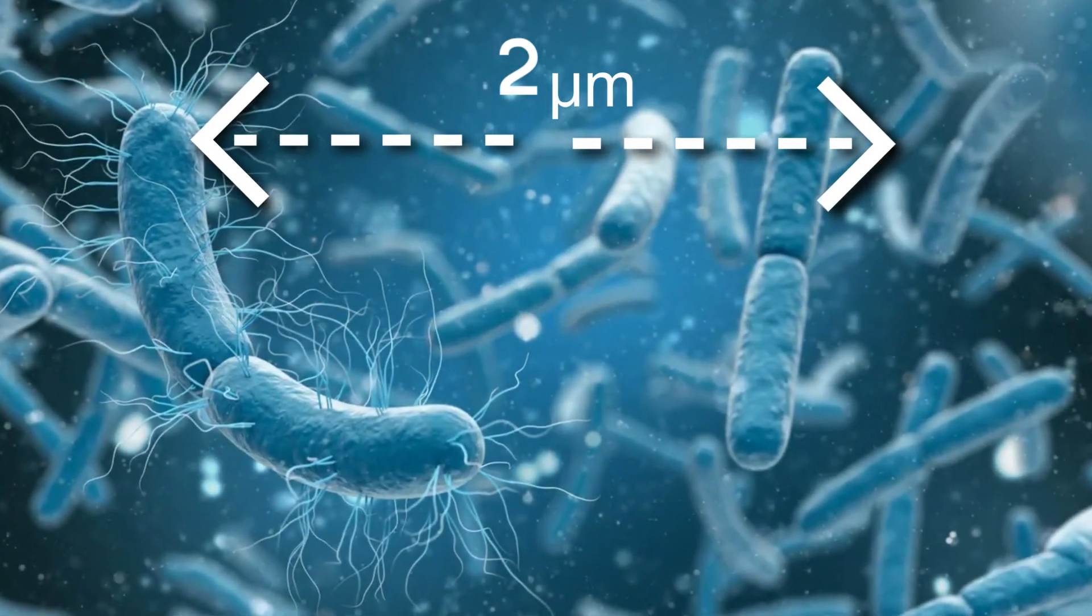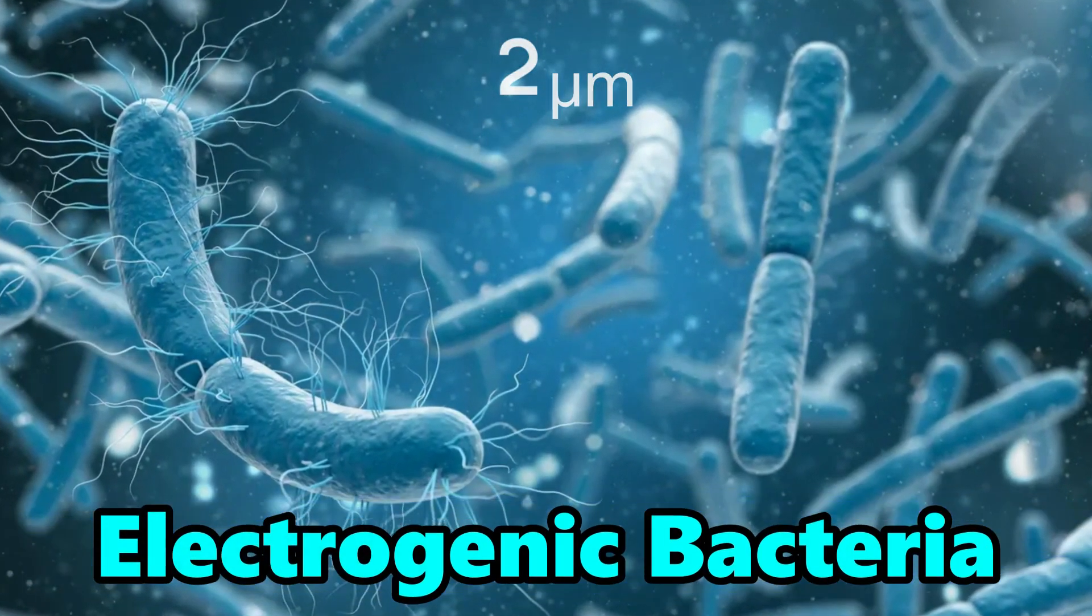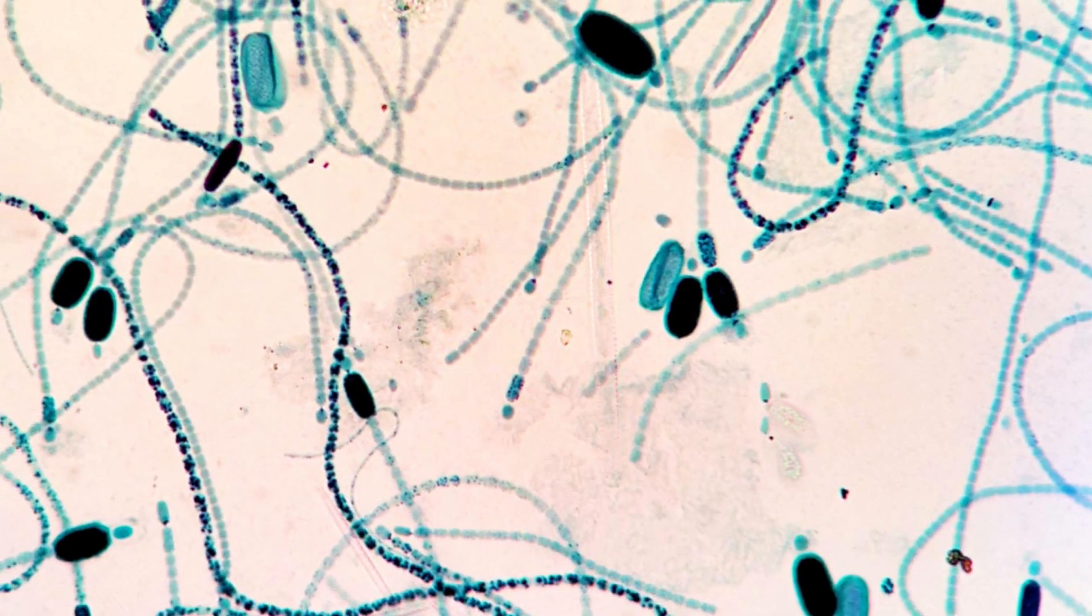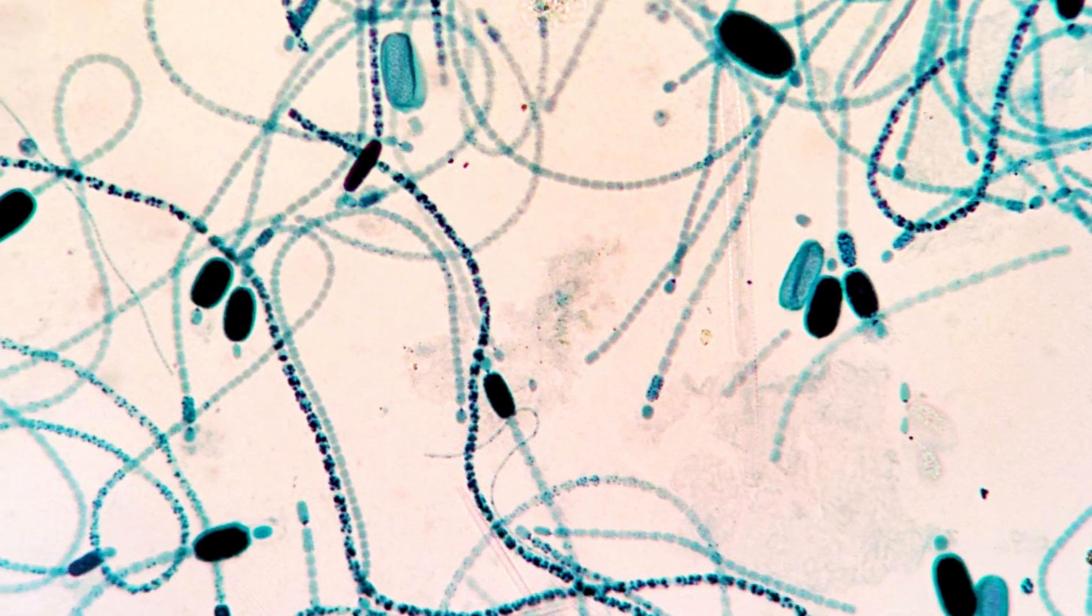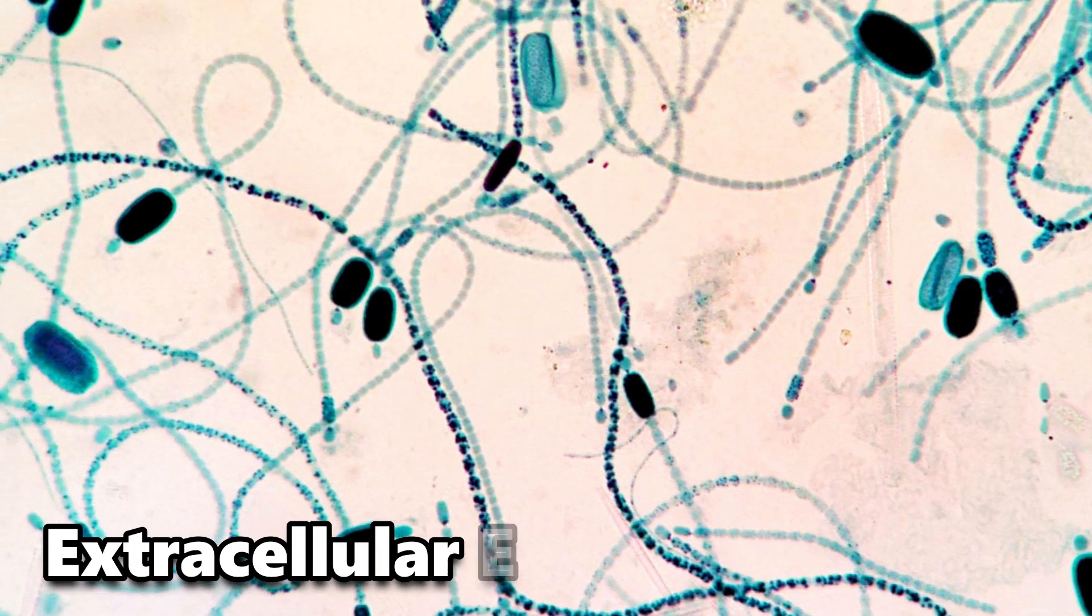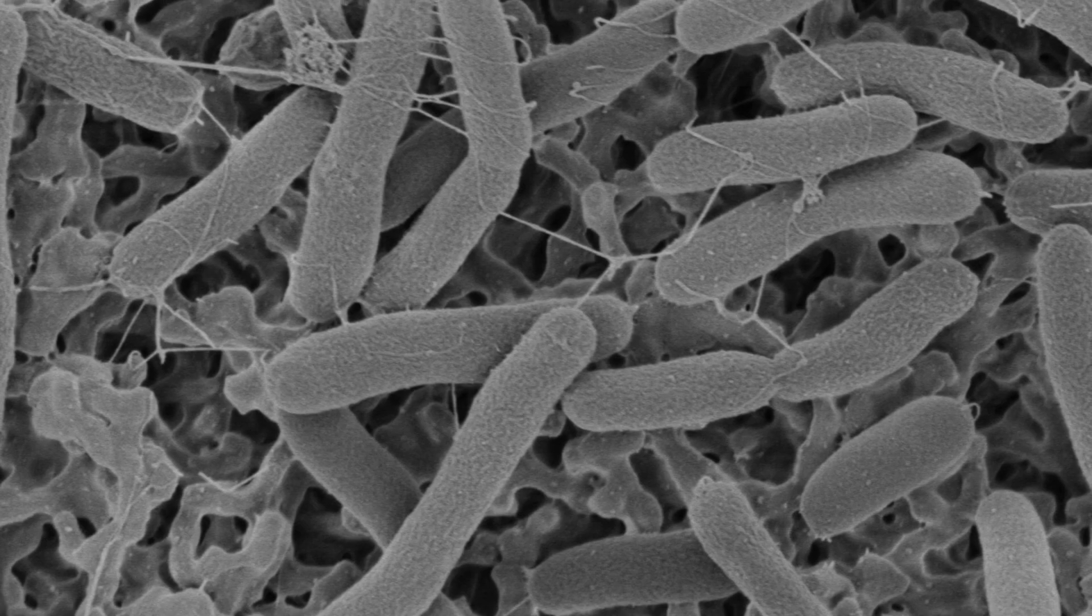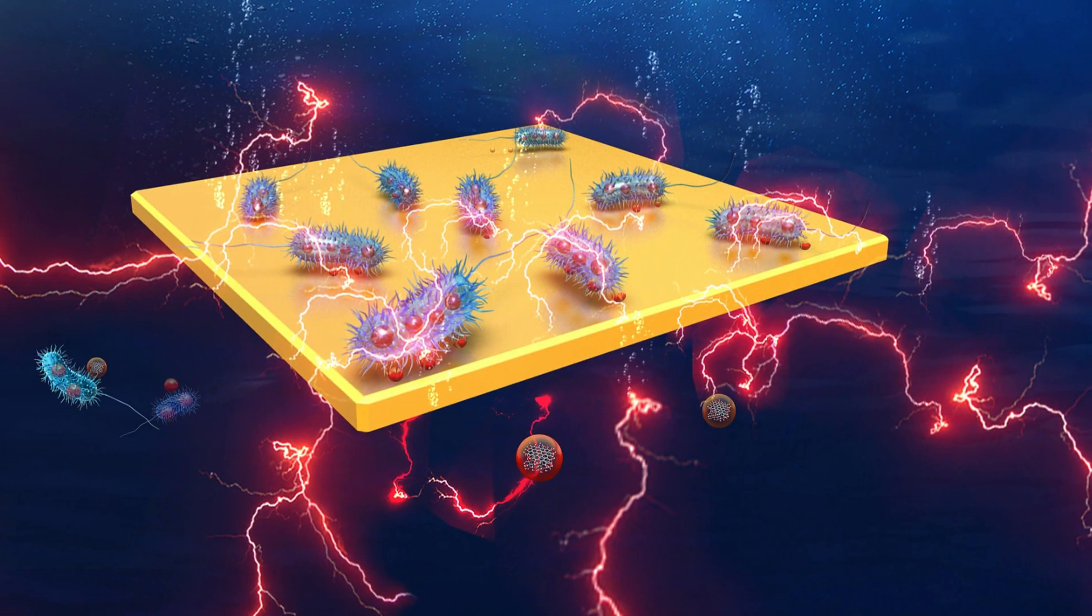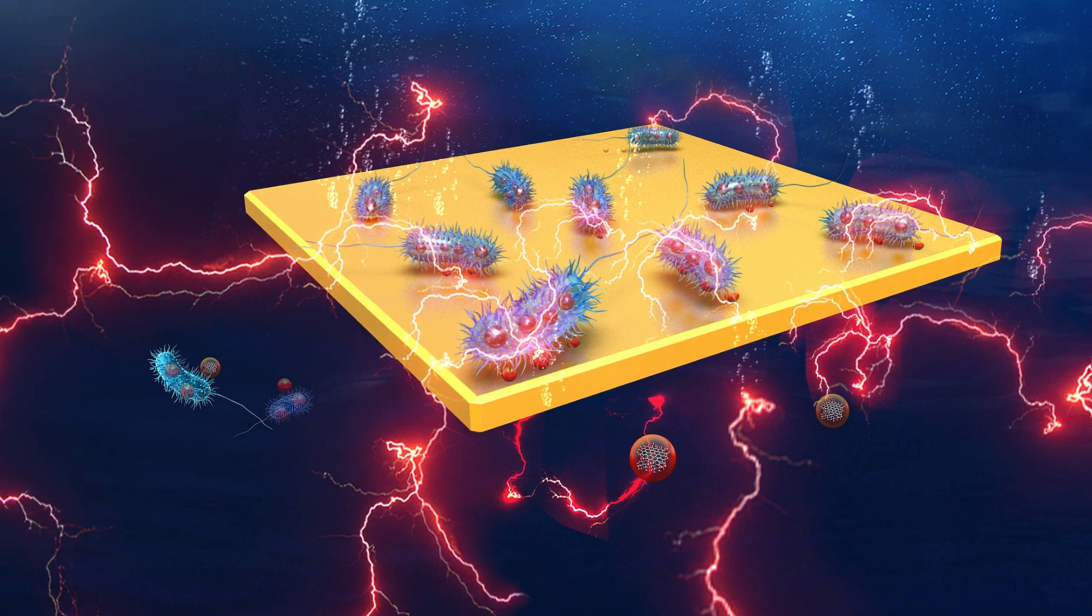Or on a smaller scale, bacteria known as Electrogenic Bacteria have the remarkable ability to produce electricity. These bacteria produce electricity through a process called extracellular electron transfer, where they release electrons from their metabolic activities. And these electrons are transferred to an electrode, generating an electric current.